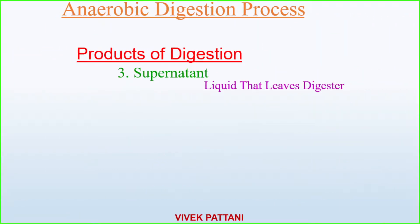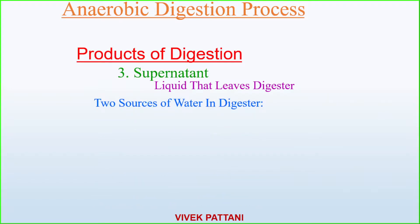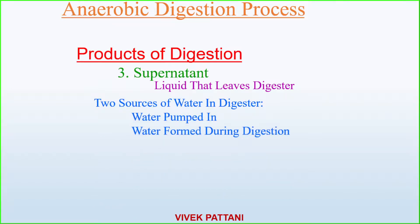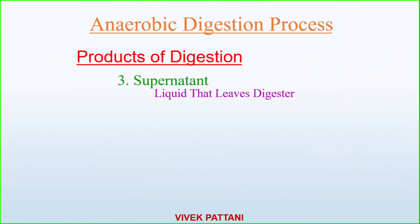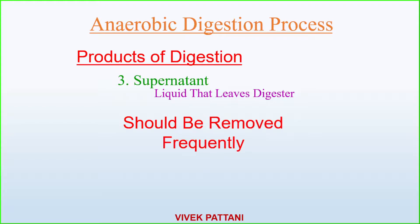The third product is supernatant — the liquid that leaves the digester. It comes from two sources: water pumped in with the sludge and water formed during digestion. It is recycled through the treatment plant and is high in solids, BOD, and ammonia. Supernatant liquid that leaves the digester should be removed frequently in small quantities.